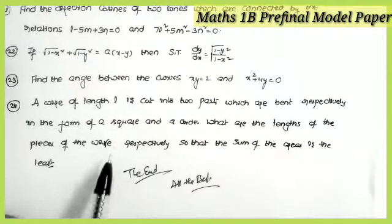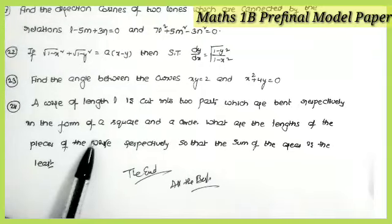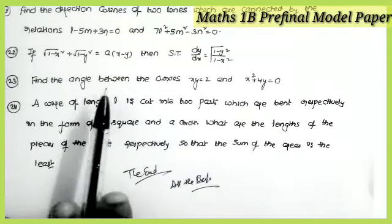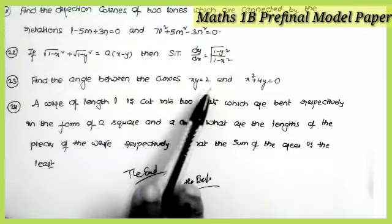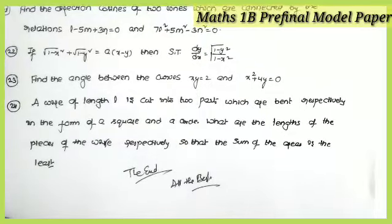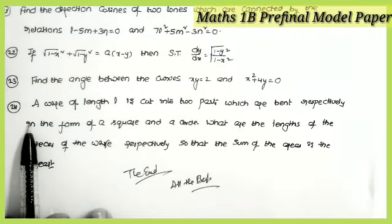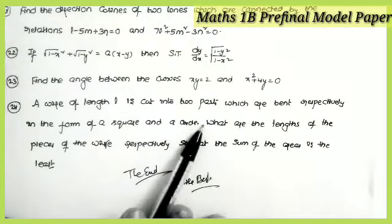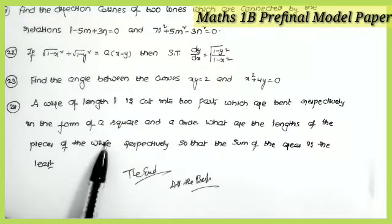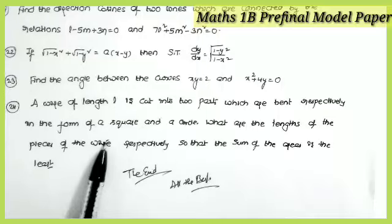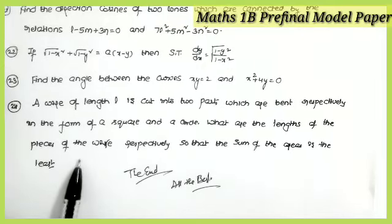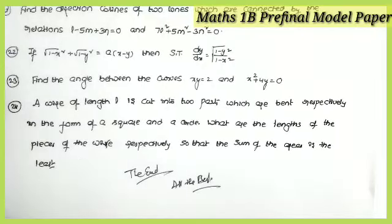The last two questions are from Applications of Derivatives. Question 23 (Tangent and Normal): find the angle between the curves xy = 2 and x² + 4y = 0. Question 24 (Maximum and Minimum): a wire of length L is cut into two parts bent respectively into a square and a circle — find the lengths of the pieces so that the sum of the areas is least.